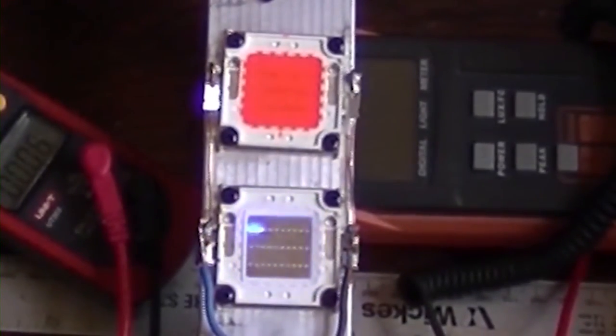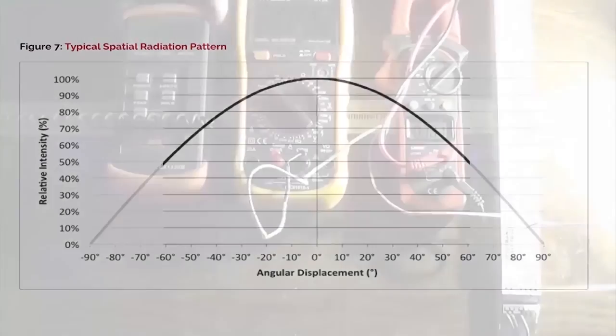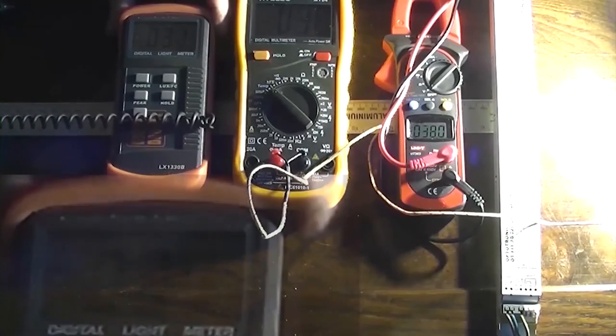Okay, so here's our angular displacement graph for our 120 degree viewing angle cob. And we'll be taking all of our lux measurements in that 100 degree zone, which is probably only 5 or 10 degrees from centre. So, if you take about 80% of these figures, that will give you an overall lighting temperature over a square metre.